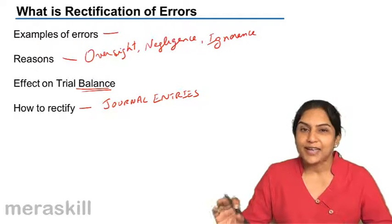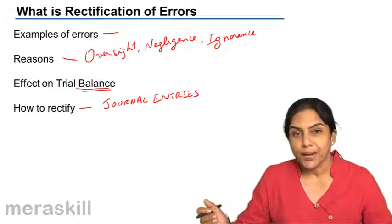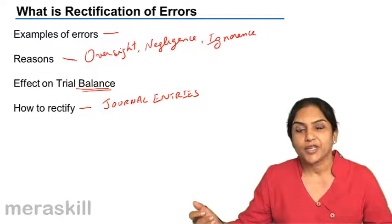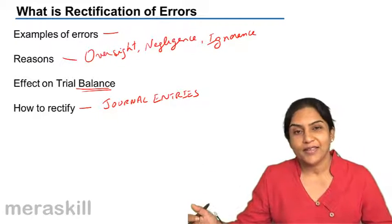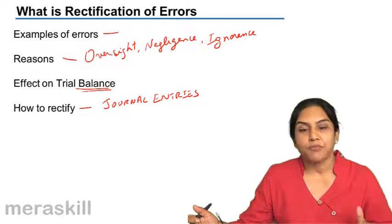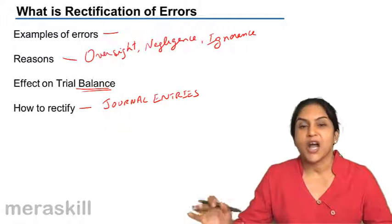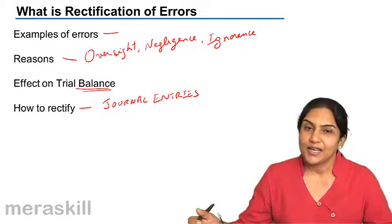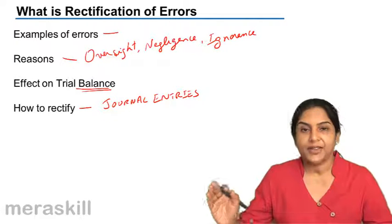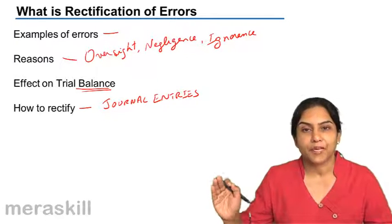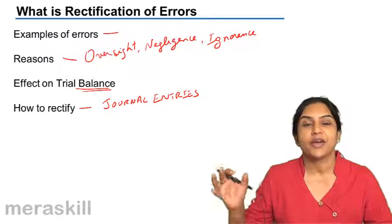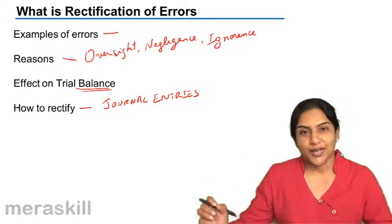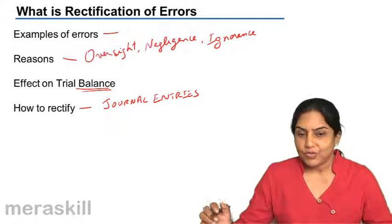Of course, the rectification would also depend on when the error is detected. Is it before preparation of the trial balance, after preparation of the trial balance, or even in the next year? Rectification of errors is nothing but correction of mistakes which have been committed during recording, posting, or taking balances to the trial balance through journal entries.